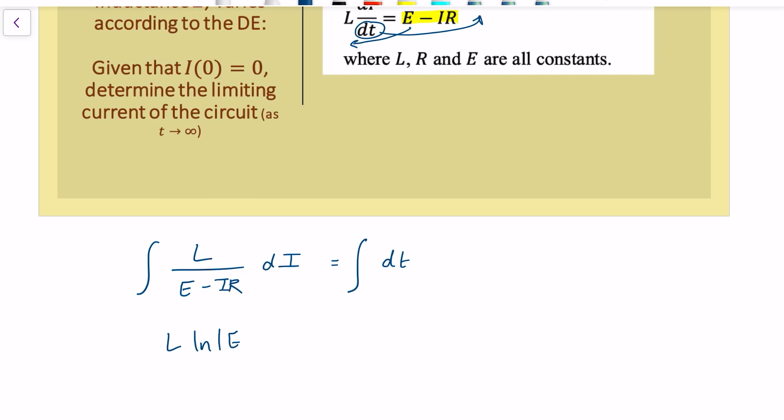L is a constant so it just stays there and we've got L times log of E minus IR. So if I put a minus sign, don't forget to divide by minus R which is the derivative of that inner function there. And then on the right hand side we're integrating 1 with respect to T. So we get T and then we need an integration constant somewhere so we'll just say here plus C.